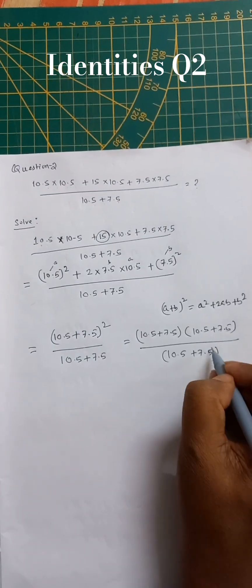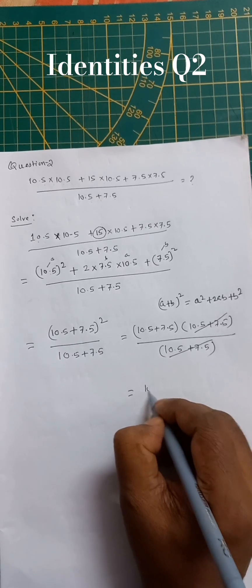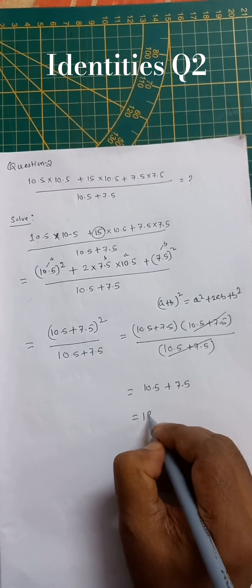So we can cancel these two. So final answer will be 10.5 plus 7.5, that is equal to 18.